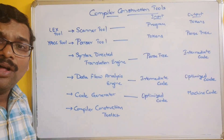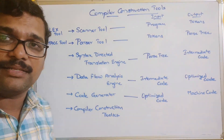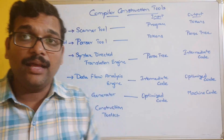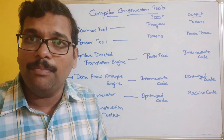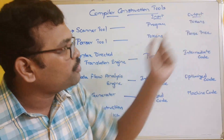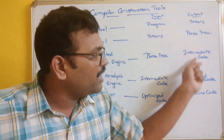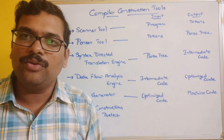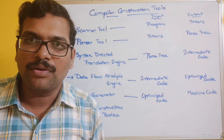All these things we have seen in the different phases. But here these are the different tools available to generate the tokens, to generate the parse tree, to generate the intermediate code, to generate the optimized code, and finally to generate the machine code.